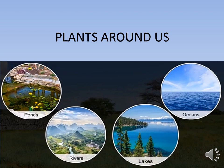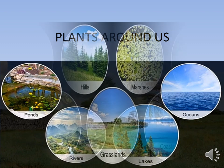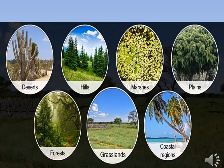Children, we can find plants almost everywhere, almost all over the earth. We can see different plants growing in different places like seashores, deserts, plains, and high snow-covered mountains. These plants have developed different features in order to survive in different places.